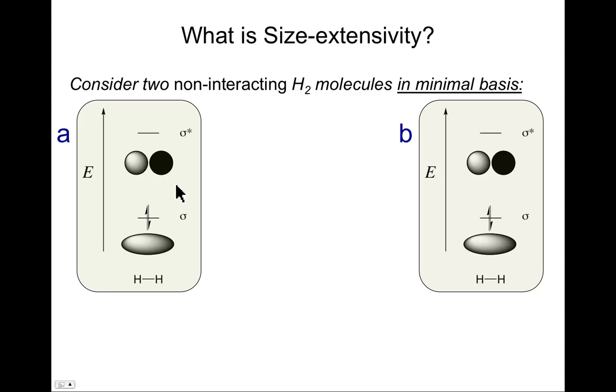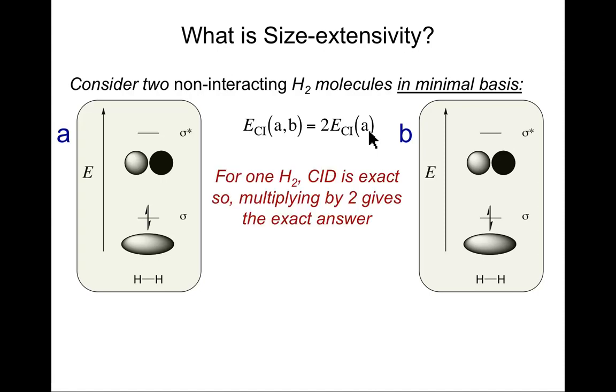So let me ask you to consider the following. What if I have two H2 molecules, and they are infinitely separated from one another so that they do not interact, and I'll continue to use a minimal basis representation. So I'll call one of them hydrogen molecule A and one of them hydrogen molecule B. Well, the energy, the CI energy for the two molecules will then be twice the energy of just one of those molecules, right? Because they don't interact, so that's pretty easy. And for one H2 molecule, well, CI doubles is actually exact, right? Because there are only, in a minimal basis set, that's everything. Two excitations is all you can do. And so if I multiply times two for CID for one hydrogen molecule, I've got to get the right energy for two hydrogen molecules that aren't interacting.